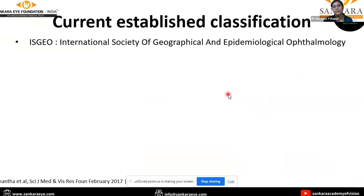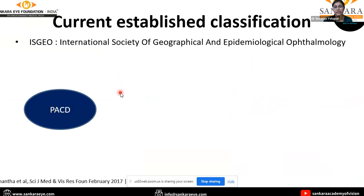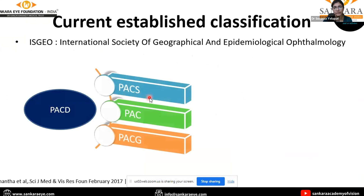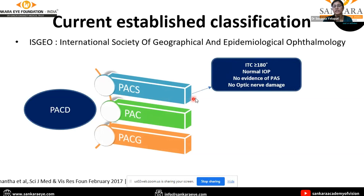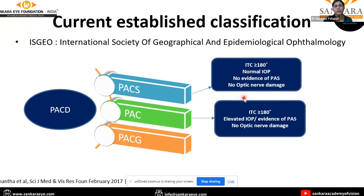The current established classification by ISGEO, based on those three criteria, divides primary angle closure disease into three types: primary angle closure suspect (PACS), primary angle closure (PAC), and primary angle closure glaucoma (PACG). In PACS, iridotrabecular contact is present in equal to or greater than 180 degrees of the angle, with normal intraocular pressure, no peripheral anterior synechiae, and no optic nerve damage. In PAC, ITC is equal to or more than 180 degrees with either elevated IOP or evidence of peripheral anterior synechiae, but no optic nerve damage.